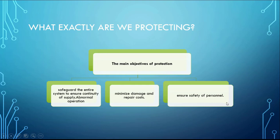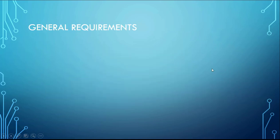You also need to ensure the safety of personnel. Personnel may need to fix the system — you don't want someone to accidentally come in contact with a live wire and get electrocuted. Safety precautions and security must be in place. Those are the main objectives of a protection system.